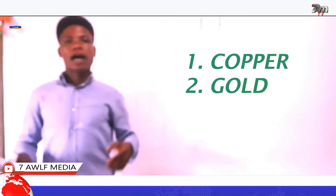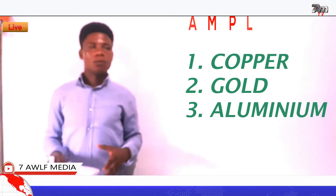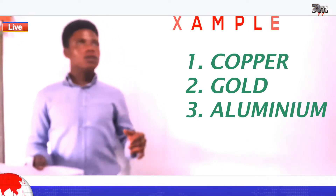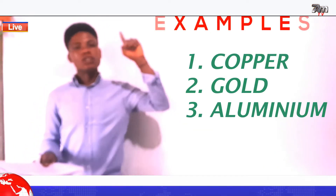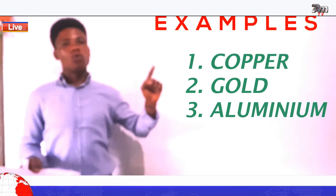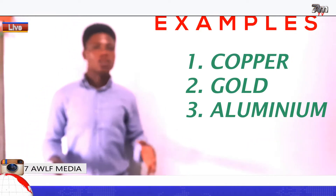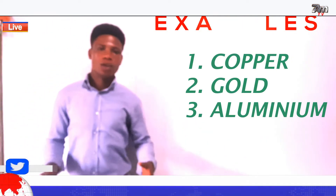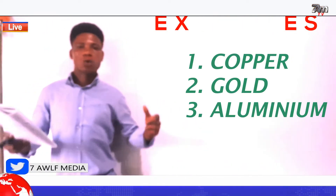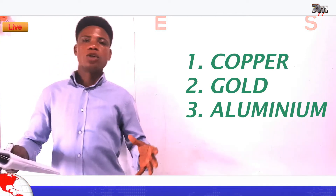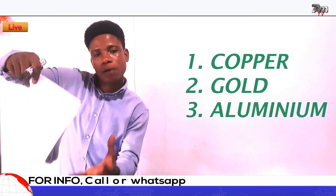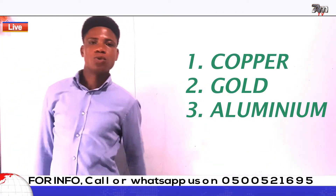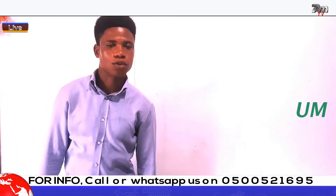Now let's talk about aluminium. Our roofing sheets are made of aluminium. Our cooking utensils are made of aluminium — what mommy uses to cook, prepare soup, prepare the food for you — they are made of aluminium.